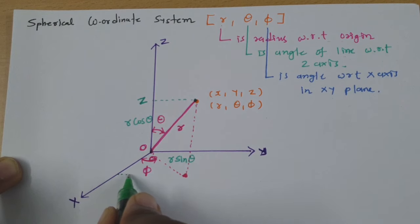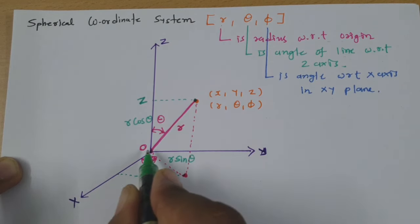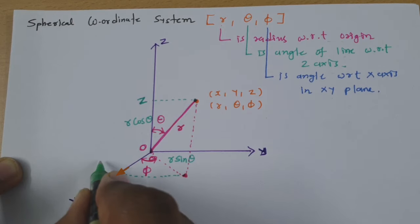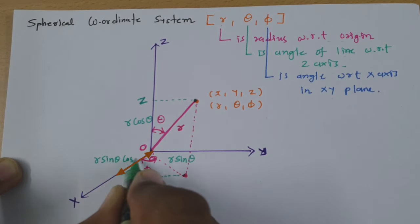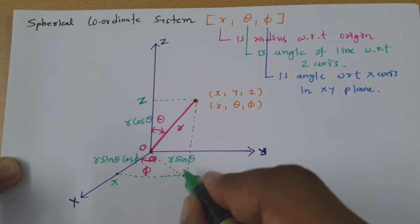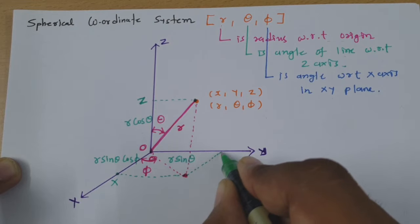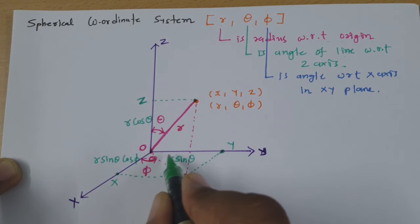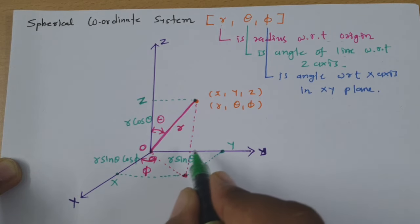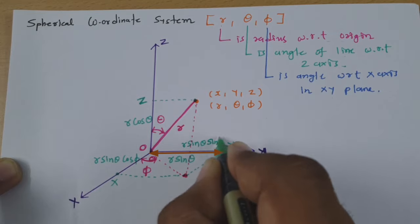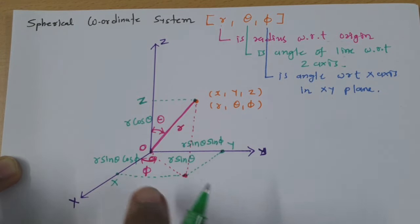Now observing the X coordinate: the projection of this point on the X axis has radius R sin Theta, and that is making angle Phi. So the cos component gives X equals R sin Theta cos Phi. And the projection on the Y axis gives the Y component. Since the angle is Phi, the Y component that will be R sin Theta sin Phi.